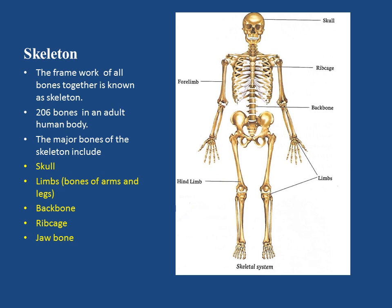There are 206 bones in an adult human body. They are of different shapes and sizes, and are mainly made up of minerals such as calcium and phosphorus. The major bones of the skeleton include the skull, limbs (bones of arms and legs), backbone, ribcage or chest bone, and jaw bone.